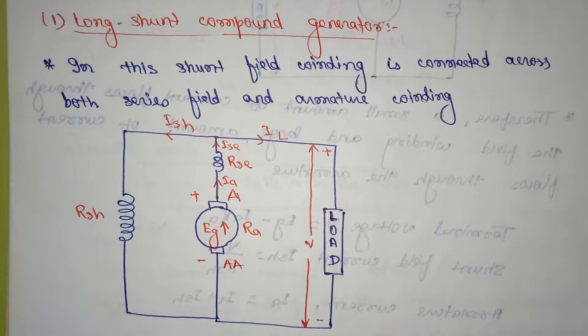So what is a compound generator? The compound generator consists of both shunt field and series field winding. One winding is in series with the other winding, each in parallel with the armature. This is called the compound generator. This is a diagram for the long shunt compound generator.